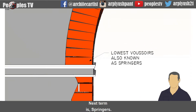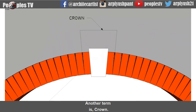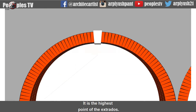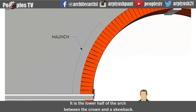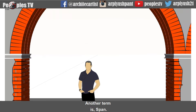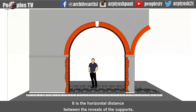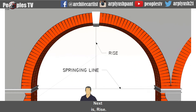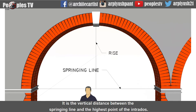Next is springers — it is the lowest voussoir immediately adjacent to the skewbacks. Another term is crown — it is the highest point of the extrados. Next is haunch — it is the lower half of the arch between the crown and the skewback. Another term is span — it is the horizontal distance between the reveals of the supports. Next is rise — it is the vertical distance between the springing line and the highest point of the intrados.